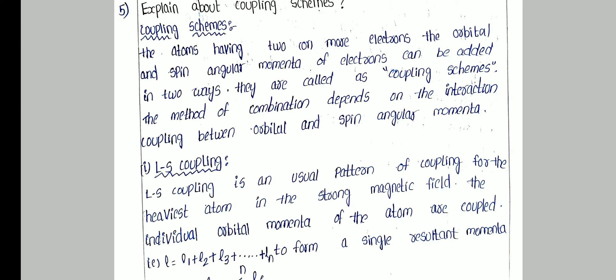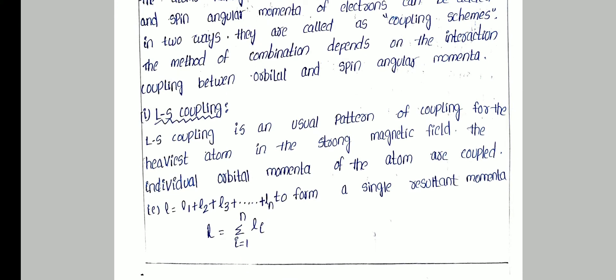There are two coupling schemes. First one is LS coupling and second one is JJ coupling. LS coupling is the usual pattern of coupling for the heaviest atoms in a strong magnetic field. The individual orbital momenta of an atom are coupled.